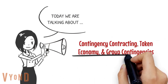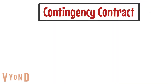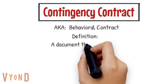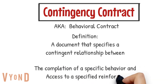Chapter 26: Contingency Contracting, Token Economies, and Group Contingencies. First we'll start with the contingency contract. These are also referred to as behavioral contracts. These are a document that specifies a contingent relationship between the completion of a specific behavior and access to a specified reinforcer.